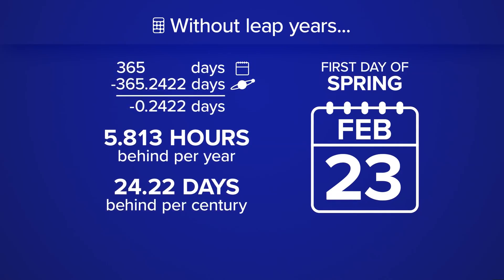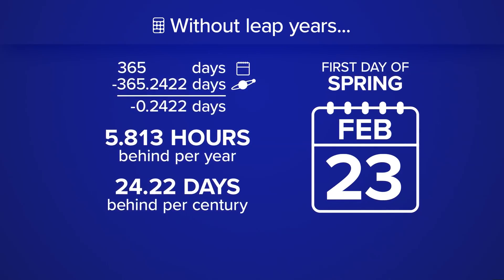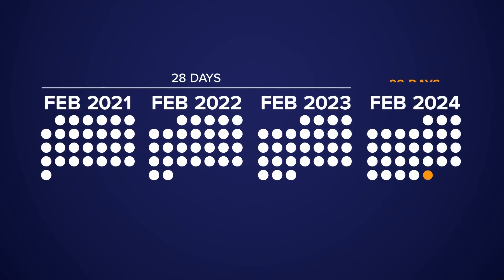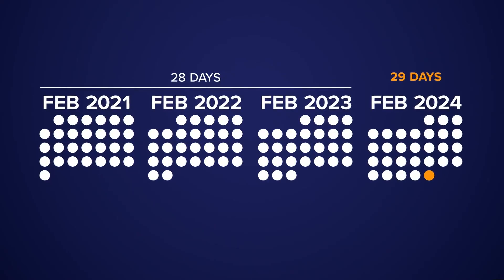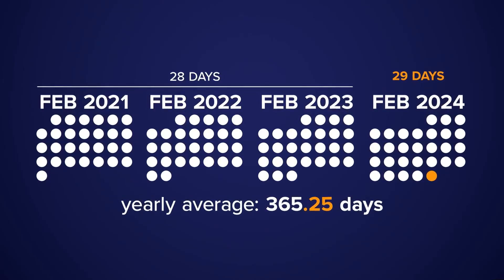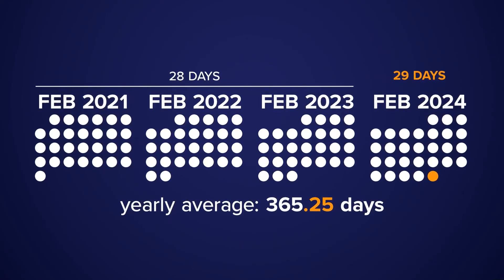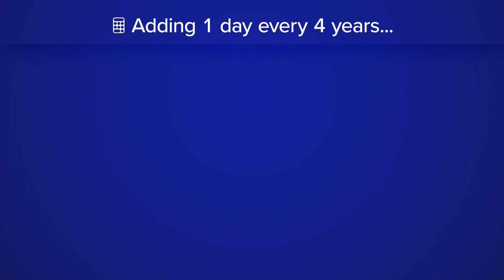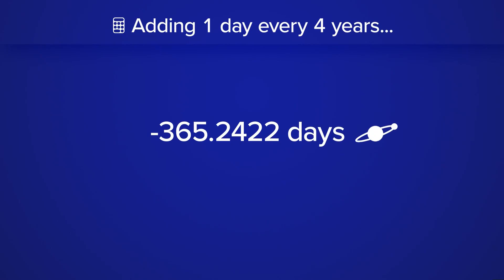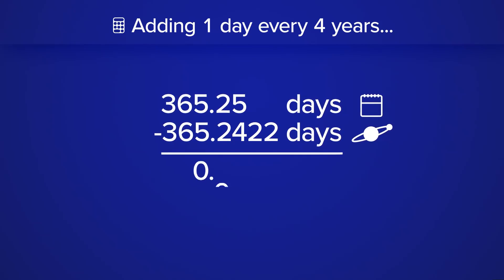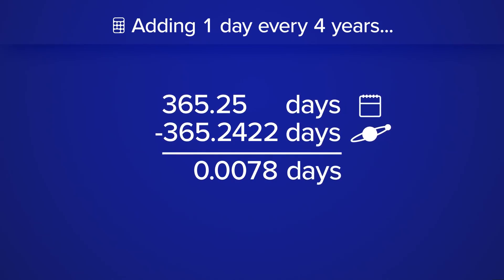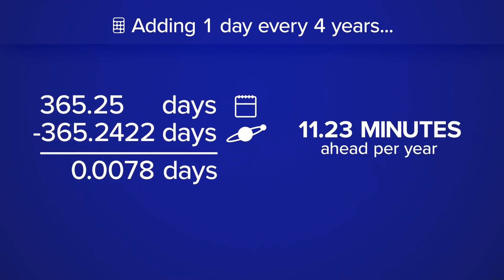So to help synchronize the time, the solution was introduced centuries ago: we add one day every four years. Problem solved, right? Not quite. When you subtract the amount of time it takes for the Earth to complete one revolution around the sun with our solution, you find out we're still about 11 minutes off each year.